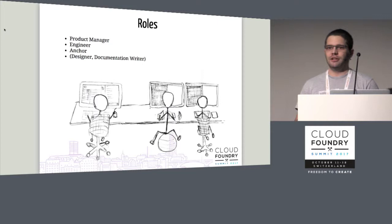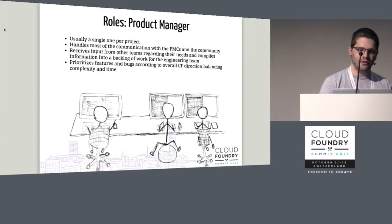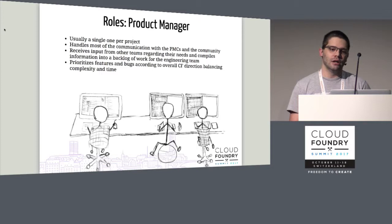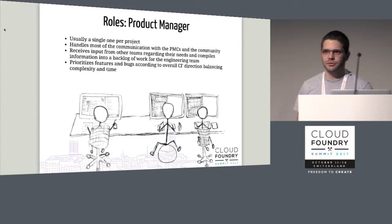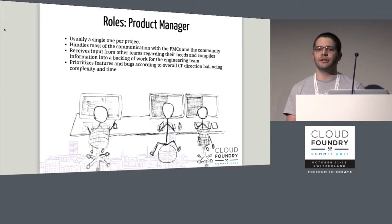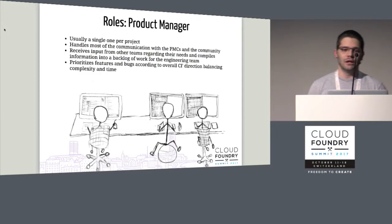For all those distributed teams, they follow a fairly similar structure. All teams will have one assigned product manager, who is responsible for receiving input from the community and the PMCs, digesting that input into a roadmap, organizing it into a prioritized backlog for engineering to work on, and making sure the engineering team always has valuable work to perform. They also serve as a bridge between their team and the rest of the organization via PMC meetings, mailing lists, and the community advisory board.